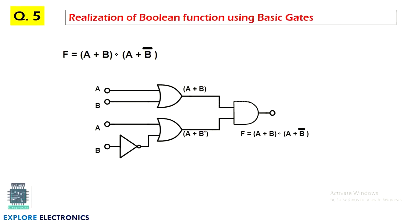Realization of a Boolean function with basic gates is the next topic. Any function can be given and you are asked to implement it using only basic gates — AND gate, OR gate, and NOT gate. By using only these three we can implement any given function. For example, the expression (A + B)(A + B̄) is given: B̄ is generated from a NOT gate, and by using two OR gates and one AND gate we can get this functionality. Any expression can be given and you may be asked to implement it.